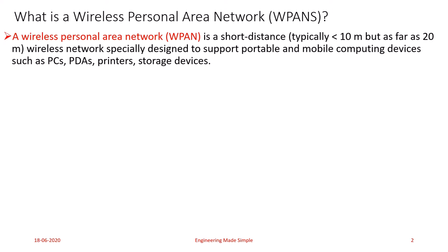What is a Wireless Personal Area Network? A WPAN is a short-distance network, typically whose coverage radius is less than 10 meters but as far as 20 meters, specifically designed to support portable and mobile computing devices such as PCs, Personal Digital Assistants (PDAs), printers, and storage devices. A simple example in day-to-day life: a Wi-Fi router at home connected to a laptop, smart TV, smart AC, and Wi-Fi printer forms a WPAN.